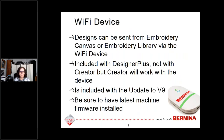One of the big things is the Wi-Fi device. This allows you to send designs from Embroidery Canvas or Embroidery Library in version 9 via a Wi-Fi device that plugs into your machine. You first set it up on your computer and connect it to your Wi-Fi, then take it to your machine where it stays plugged in. The Wi-Fi device is included with Designer Plus version 9, not with Creator version 9 — but Creator will work with it if you purchase the device separately. It is also included in update packages to version 9. It's important to have the latest machine firmware installed; check with your dealer about the latest version for your machine.